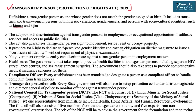First of all, what is the definition of a transgender person? The Act of 2019 says that a person whose gender does not match the gender assigned at birth is a transgender. It includes trans men, trans women, persons with intersex variations, gender queers, and persons with socio-cultural identities like kinners or hijras.